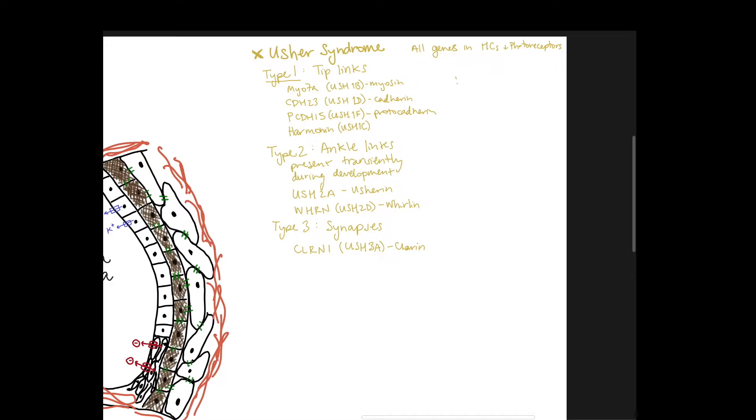Type 1 results in deafness at birth, vestibular dysfunction at birth, and childhood vision loss. The tip links are super important, and without them all three of these functions are really limited. Type 2 results in moderate to severe hearing loss, normal vestibular function, and adolescent vision loss.